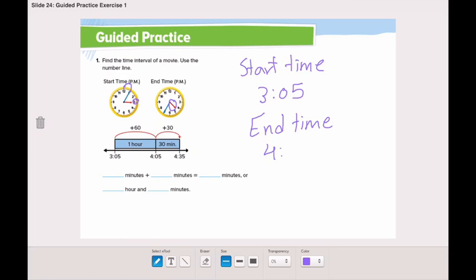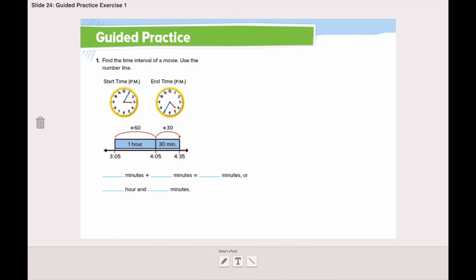Let's count how many minutes: 5, 10, 15, 20, 25, 30, 35. So it's 4:35. Now, what is the time interval? We will start by counting from 3:05 until 4:05 or 5 minutes past 4. We have 1 hour, which is 60 minutes. Then, from 5 minutes past 4 until 35 minutes past 4. We will start from 5 until we reach the blue hand: 5, 10, 15, 20, 25, 30. We have 30 minutes.